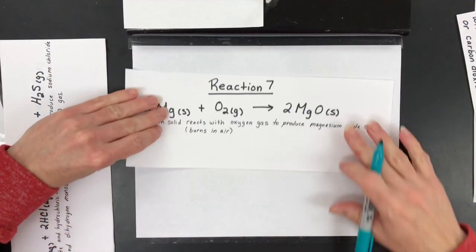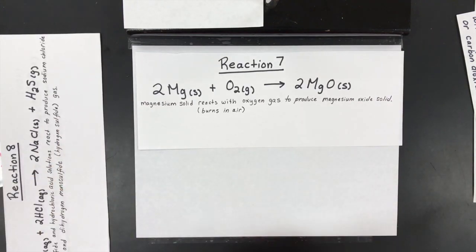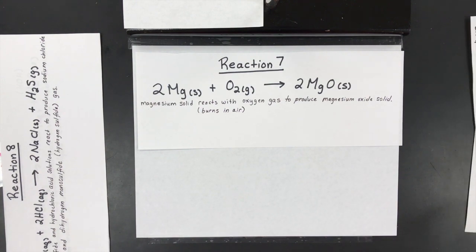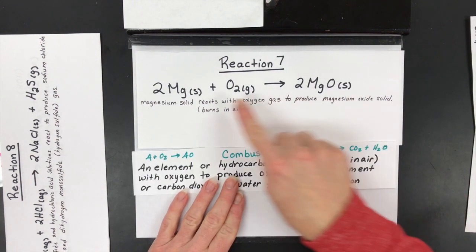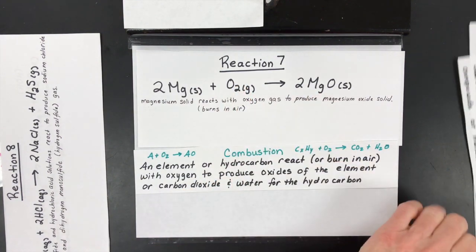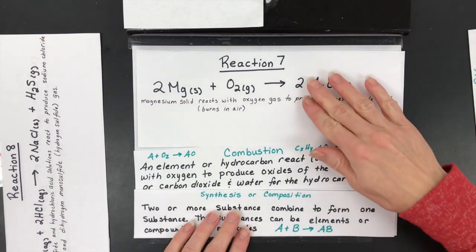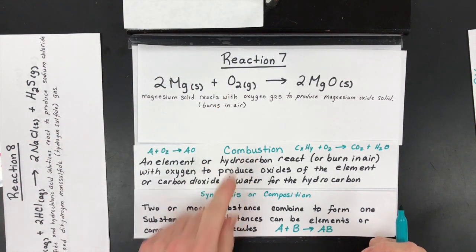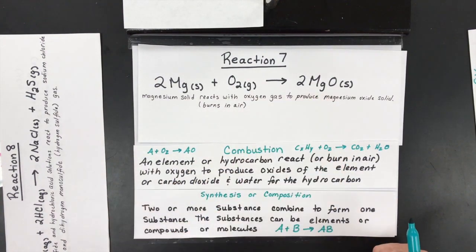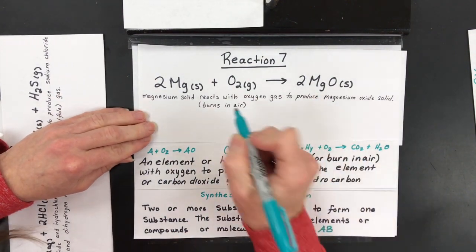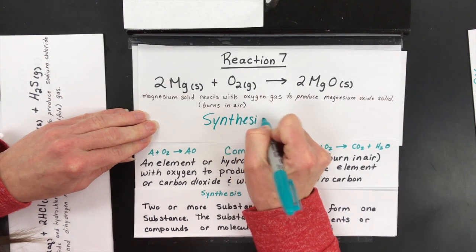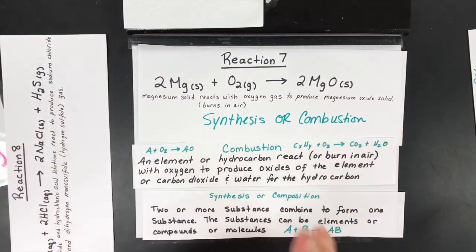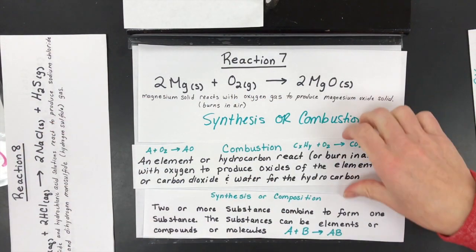All right. Reaction seven, almost near the end. Give that one a shot. What do you think? This is almost a trick question. I'll give you a hint. There's two answers. This can be a combustion because we're burning magnesium in air and making a metal oxide, or it can be synthesis. This can be both. So you have oxygen. That's what allows it to be a combustion, but it also takes two elements and makes one compound. So that's why it's going to be a synthesis. So you can say synthesis or combustion, mainly because of that oxygen from the air.